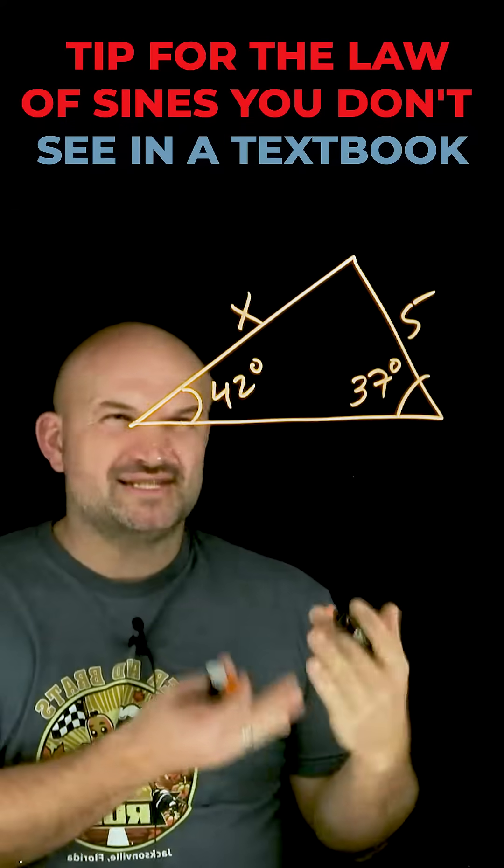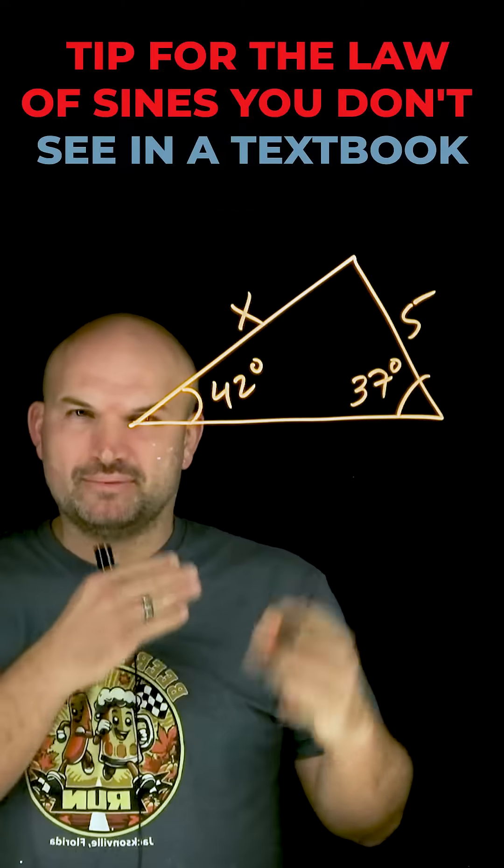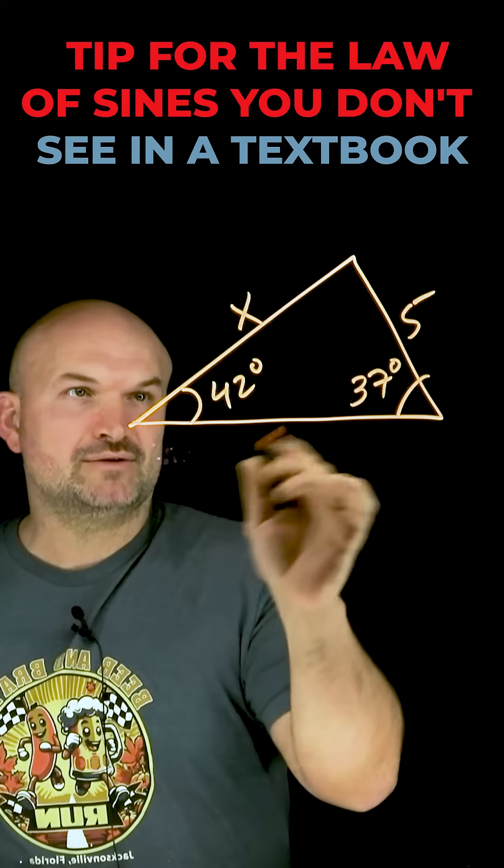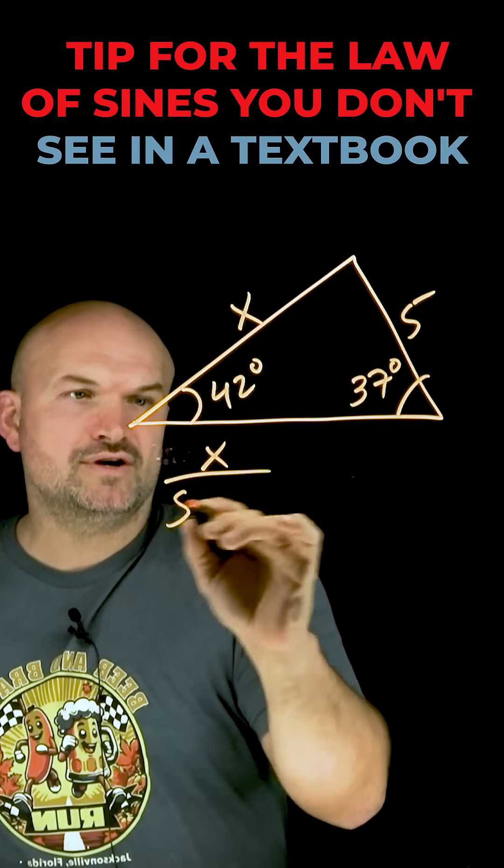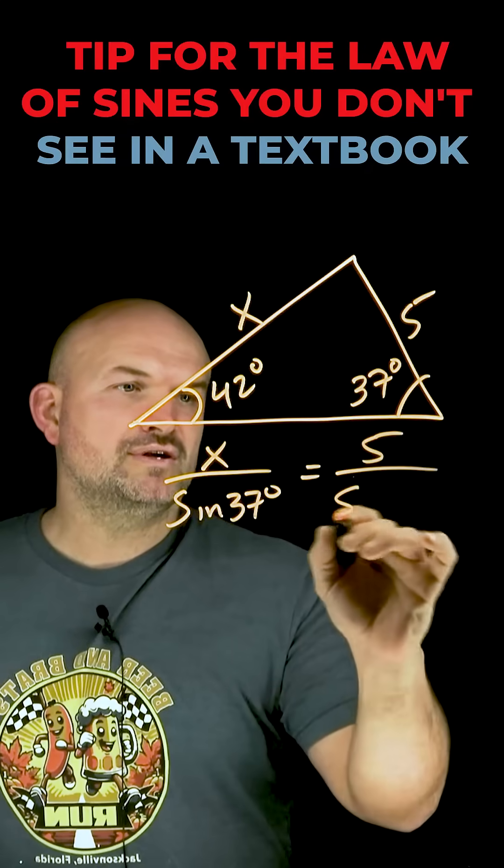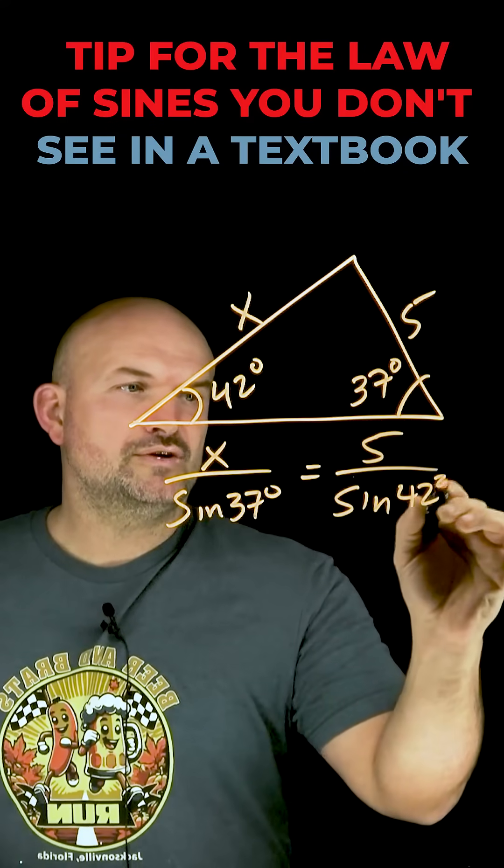Well, one thing that we don't see a lot in the textbooks is whenever you're applying the law of sines, always make your unknown in the numerator. So for instance, we can write the ratio here of x over sine of 37 degrees is equal to 5 over the sine of 42 degrees.